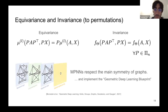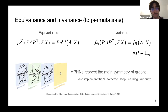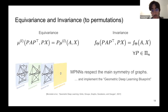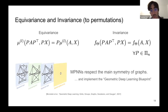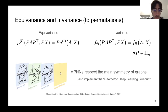This is a very important inductive bias. Since nodes in the vertex set can be ordered arbitrarily, MPNNs respect the main symmetries of graphs. In this sense we can say they implement the geometric deep learning blueprint — equivariant layers followed by an invariant global readout.